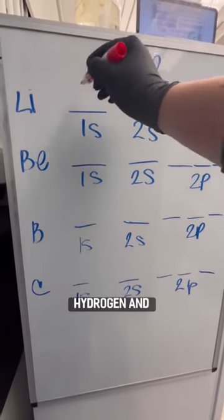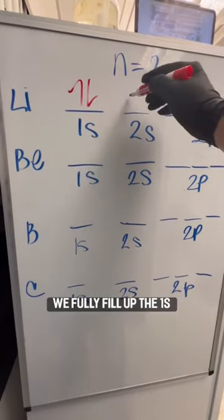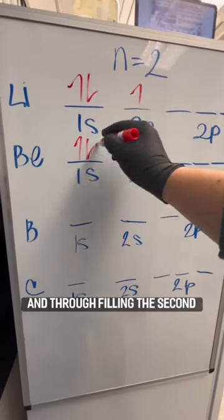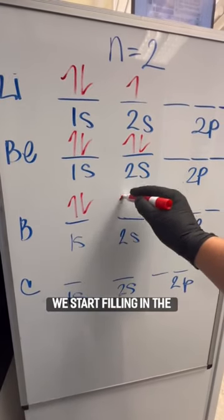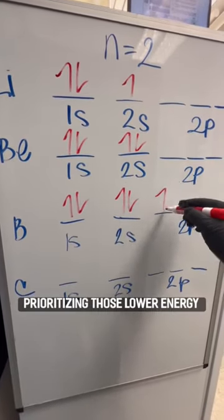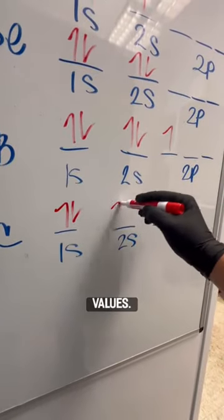We see through the transition of hydrogen and helium, we fully fill up the 1s orbital, and through filling the second energy levels such as lithium, beryllium, and boron, we start filling in the electrons. We're prioritizing those lower energy levels first, and orbitals with lower L values.